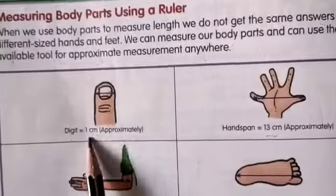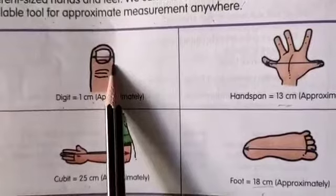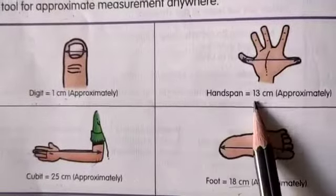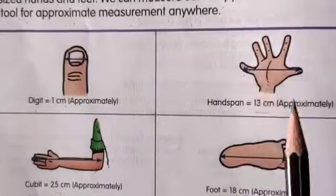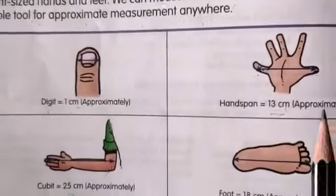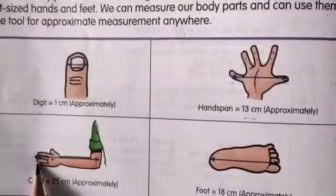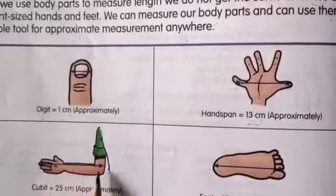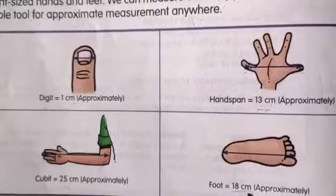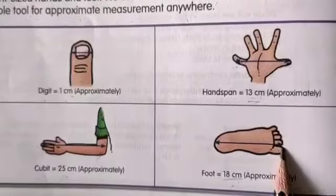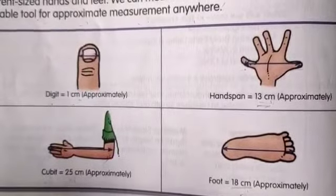So children, you can see here - digit. It is 1 centimeter. In the finger, this part we will measure as a digit - it will be 1 centimeter. Now hand span - hand span is 13 centimeters, from thumb to little finger. If you measure it, it will be 13 centimeters. Different pupils will have different measurements. Here, from here to here, it is cubit - 25 centimeters. Foot is 18 centimeters, from here to here.